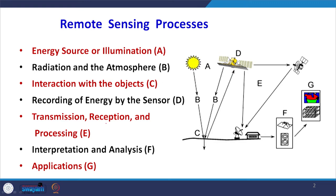This slide shows what are the different processes involved when we are acquiring the image. There is a source of energy, which is the sun, illuminating the earth surface. When this energy is travelling to the ground object C, there is an intervening atmosphere, indicated by B. The radiations travel from the source to the ground and return from the object to the sensor D, which is mounted in the satellite.